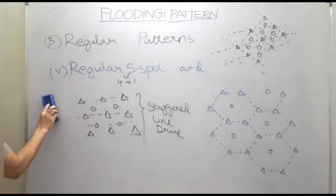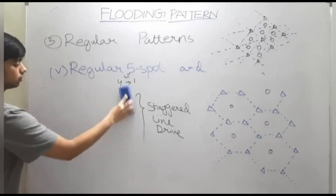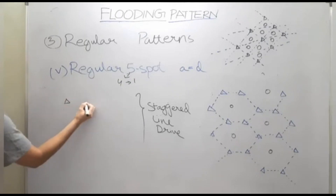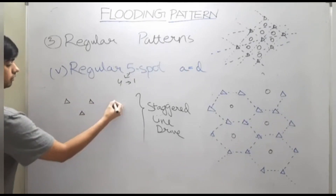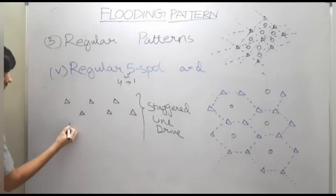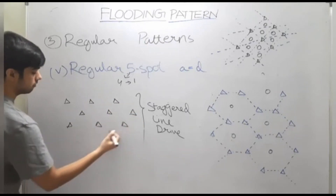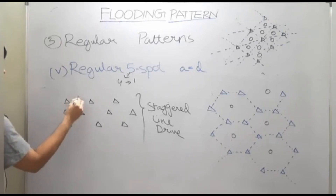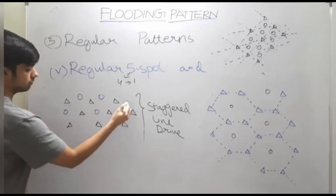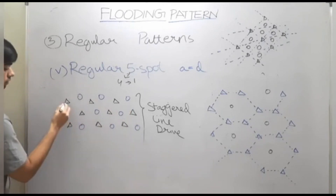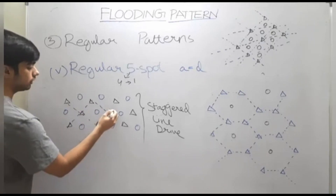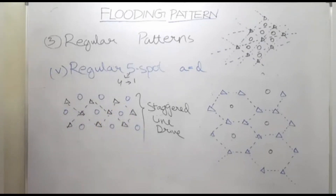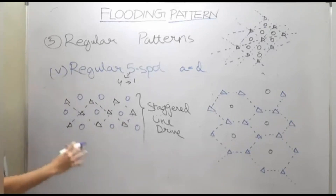The regular five-spot pattern and staggered line drive pattern are the same. At most, they can change the orientation of the structure of the pattern, but the pattern and efficiency — everything will remain the same.